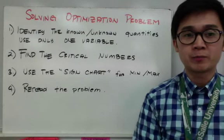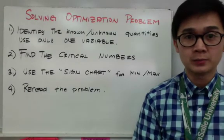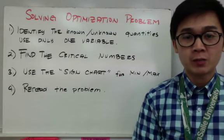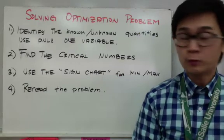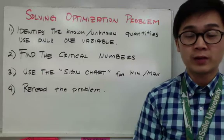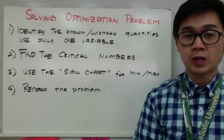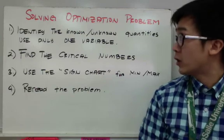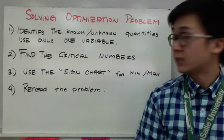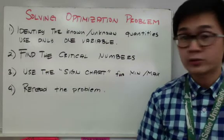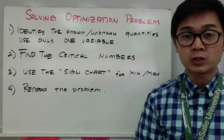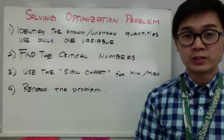One of the word problems in calculus is to solve optimization problems. There are some series of steps that we can remember to solve problems involving optimization. First, we need to identify the known and unknown quantities, and we should only use one variable when solving optimization problems. We also need to know how to find the critical numbers, which is basically finding the first derivative and setting it to zero using the sign chart. After you've finished, you need to read the problem again to make sure that you answer all questions.